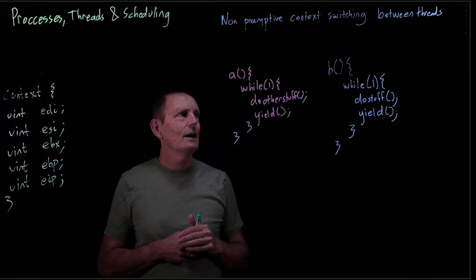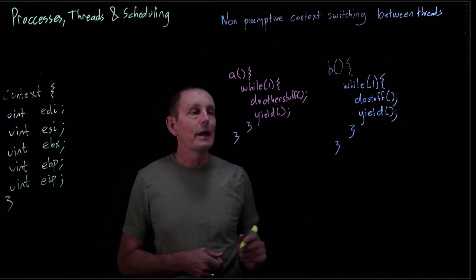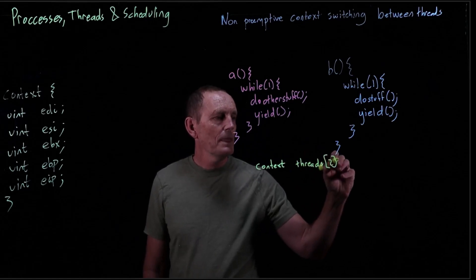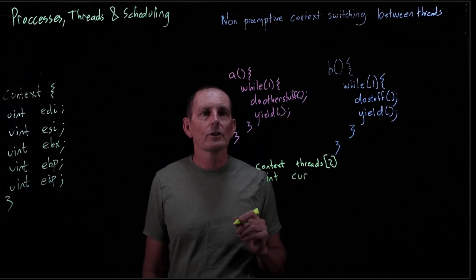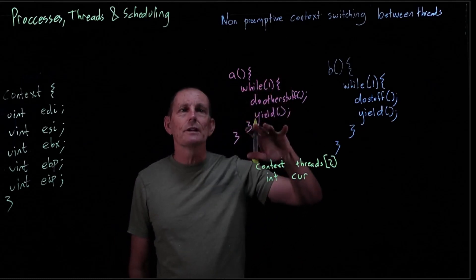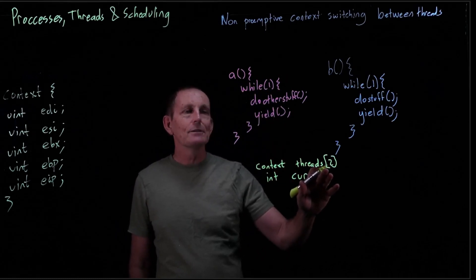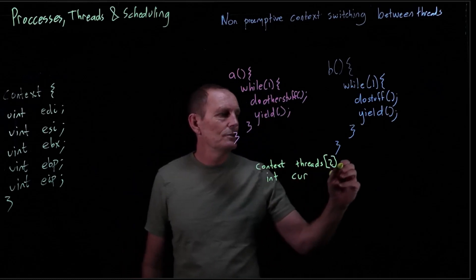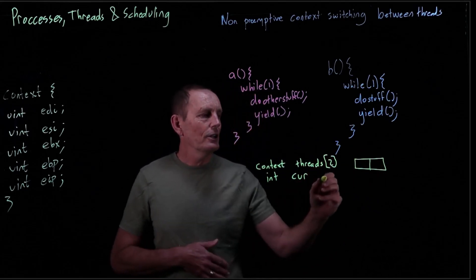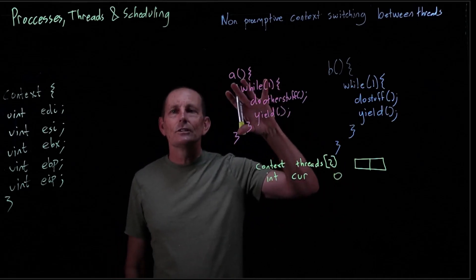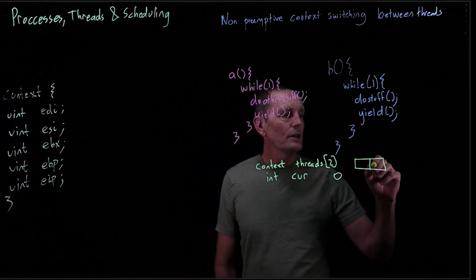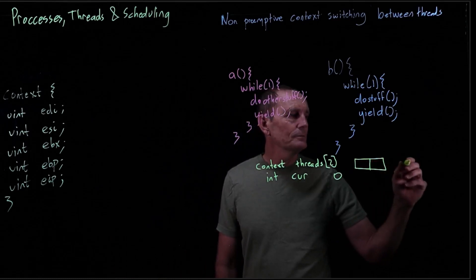Let's look at how we're representing these threads. We'll have an array of context pointers called threads, an array of two. We'll also store the current thread — just a number, 0 or 1. Let's say A is the one running right now, so threads at 0 is A. That means A is currently running, so it has its registers in the actual registers. Threads at 1 is more interesting — it's going to be a pointer to a context.